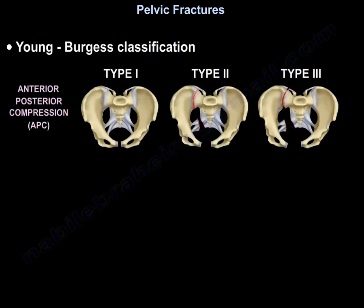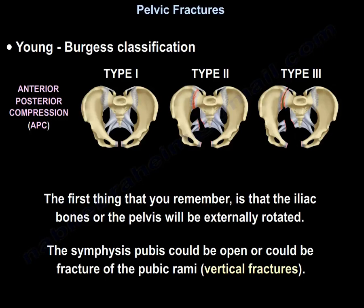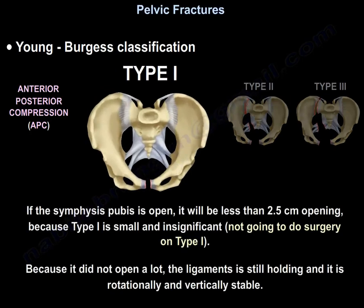Anteroposterior compression involves an external force to one or both sides of the pelvis, direct impact on the pelvis, or forcible abduction of the legs. The iliac bones will be externally rotated. The symphysis pubis could be open or there could be fracture of the pubic rami with vertical fractures. In type 1, if you open the symphysis pubis it will be less than 2.5 cm - it is insignificant, no surgery is needed, the ligaments are still holding, and it is rotationally and vertically stable.